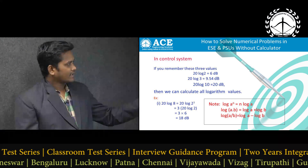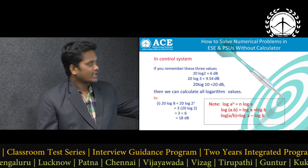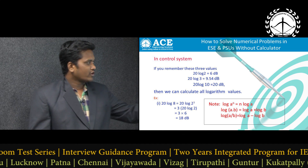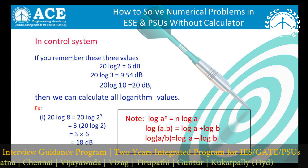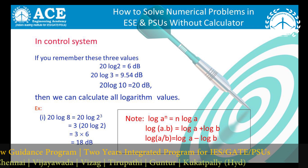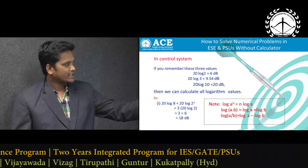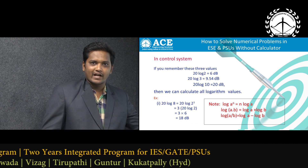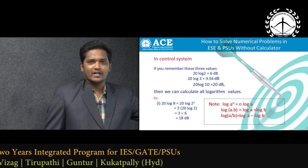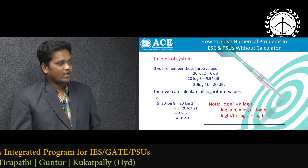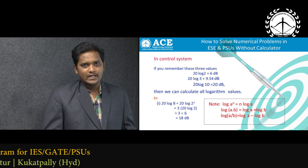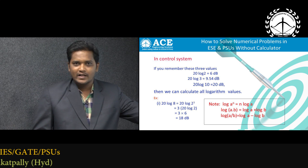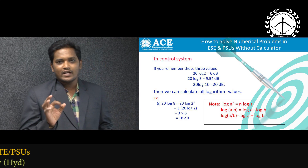The first slide presents logarithm values. In control system subject we come across these logarithm values frequently. Just remember three key values: 20 log 2 equals 6 dB, 20 log 3 equals 9.54 dB, and 20 log 10 equals 20 dB. Also remember the formulas: log(a^n) = n·log(a), log(ab) = log(a) + log(b), and log(a/b) = log(a) − log(b). Using these three values along with these formulas, we can calculate any logarithm value.